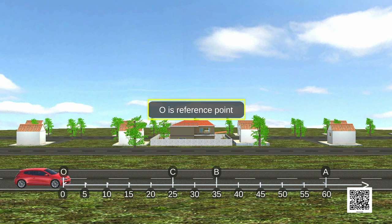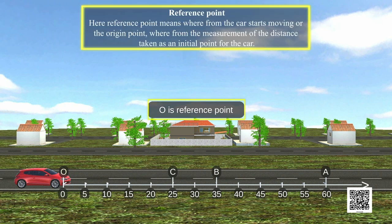Let us see the reference point in straight line. Reference Point: Here, reference point means where from the car starts moving or the origin point, where from the measurement of the distance is taken as an initial point for the car.